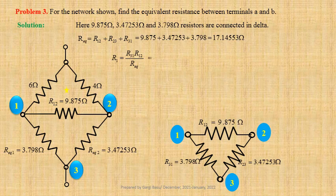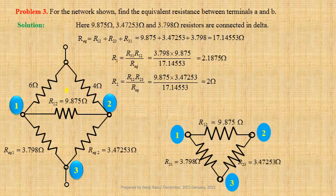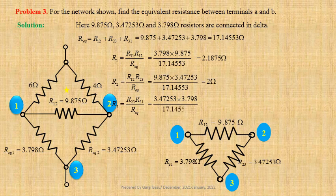Using values, 3.798 times 9.875 divided by 17.14553 equals 2.1875 ohm. R2 equals R12 times R23 divided by Req; using values 9.875 times 3.47253 divided by 17.14553 equals 2 ohm. R3 equals R23 times R31 divided by Req; using values 3.47253 times 3.798 divided by 17.14553 equals 0.76922 ohm.